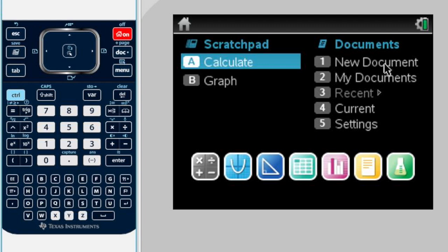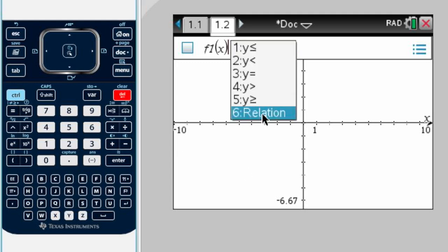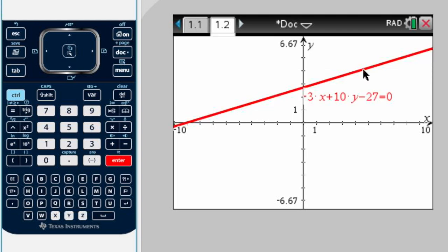I'm going to open another one. Again, we delete and go to relation. Even when we have an equation such as negative 3x plus 10y minus 27 equals 0, we press enter and we see the line.